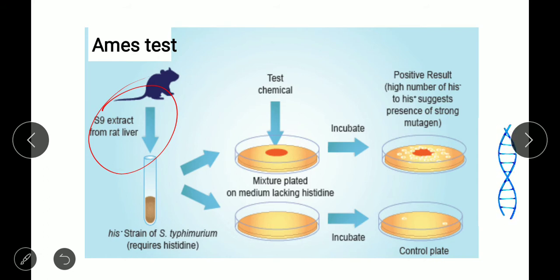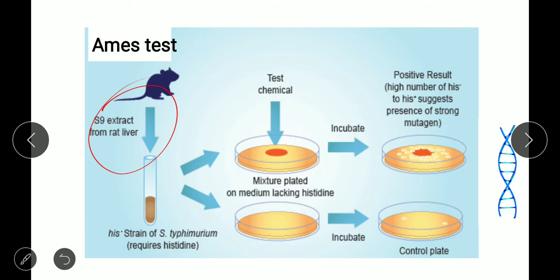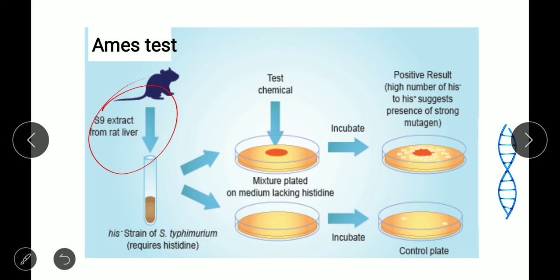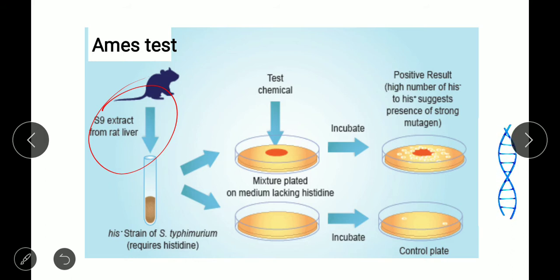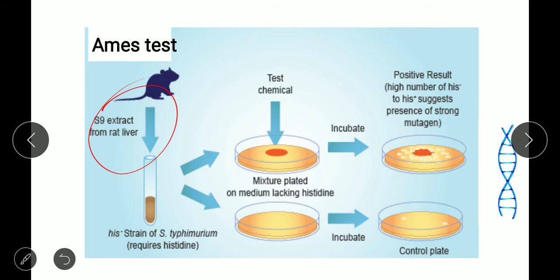We take a loop full of bacteria and streak onto the plate with a minimal amount of histidine — mostly histidine is absent in the media we use. That is the control plate. For the test plate, we add the test chemical sample. We do not know if mutagenic agents are present in the chemical, so we test it by adding the sample.